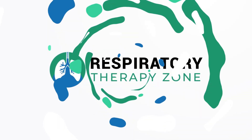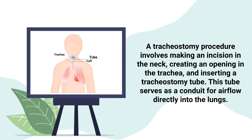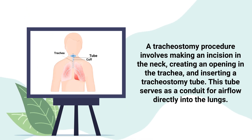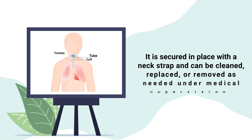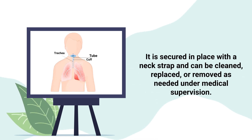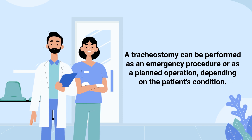A tracheostomy procedure involves making an incision in the neck, creating an opening in the trachea, and inserting a tracheostomy tube. The tube serves as a conduit for airflow directly into the lungs. It is secured in place with a neck strap and can be cleaned, replaced, or removed as needed under medical supervision.